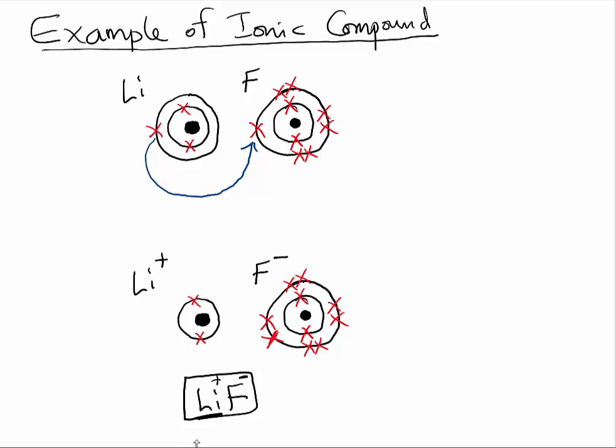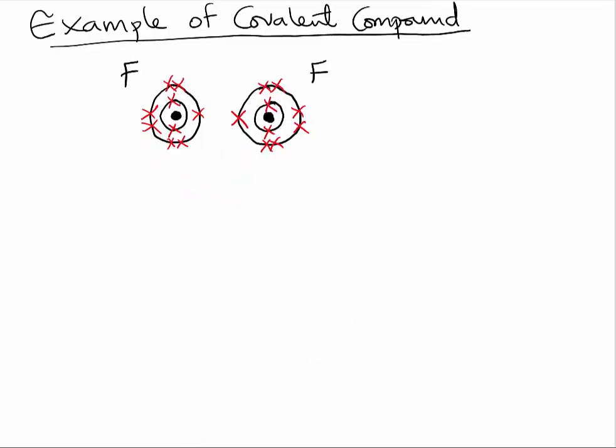Let us now take a look at how covalent compounds are formed. Take a look at these two atoms — each of them is fluorine. Each of them has seven electrons in its outermost shell. How can they both be stable? There is no metal around here; both fluorine atoms are non-metals. So the best thing they can do is share electrons, and both of them will share electrons.